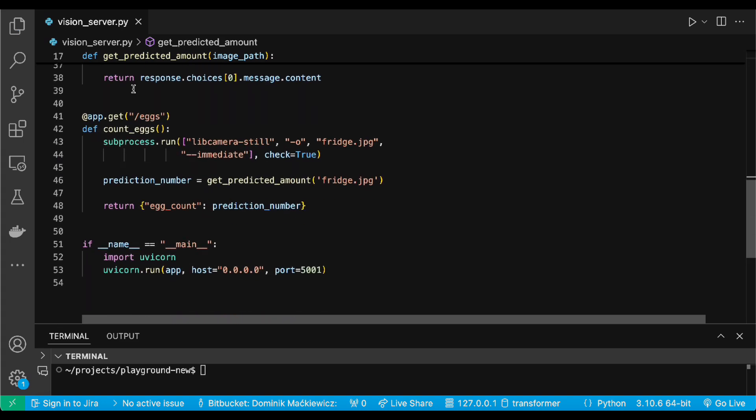And the whole server is just one get method, slash eggs. Subprocess is responsible for running command-line function inside Python script, getting the predicted number, and return simple JSON-like format. It's develop environment, so I am using UviCorn to run this application. And that's basically it.